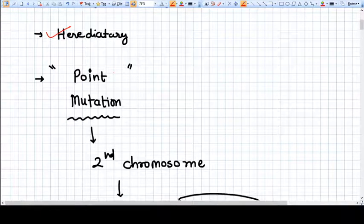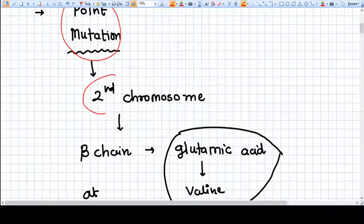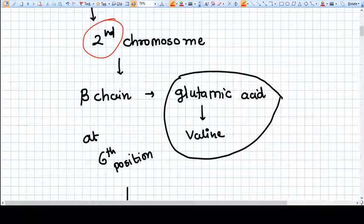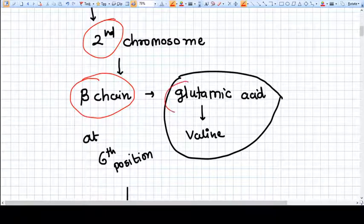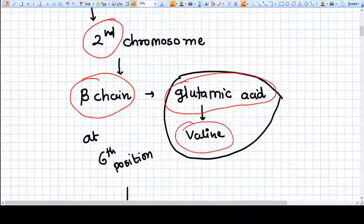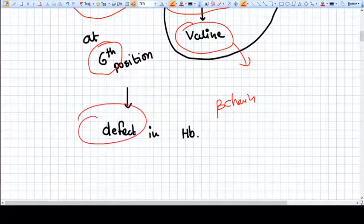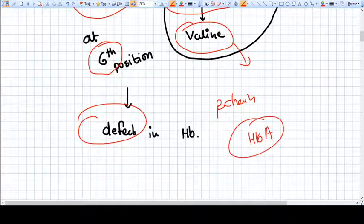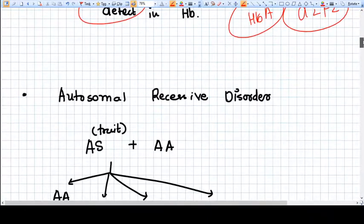The very basic problem here in genes is a point mutation on the second chromosome in the beta chain gene, where glutamic acid replaces valine at the sixth position. So the beta chain will be defective. Hemoglobin adult has alpha two beta two, total four chains, and those beta chains are defective, not normal.